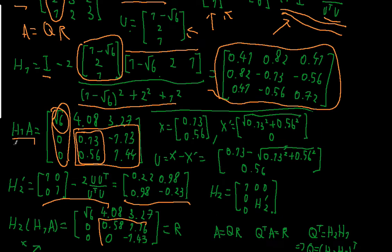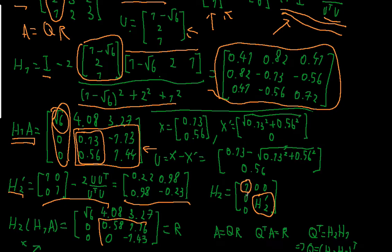Now, to be able to multiply A times H1 by the second Householder matrix, we need to have the same number of dimensions as before. So we need to make the second Householder transformation a 3x3 matrix. We do so by putting the 2x2 Householder matrix in the place of the submatrix, putting a 1 in the diagonal, and 0 elsewhere outside.